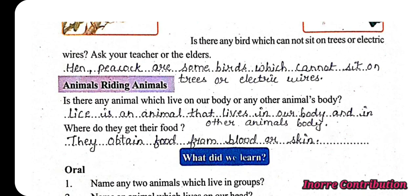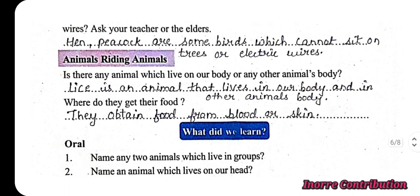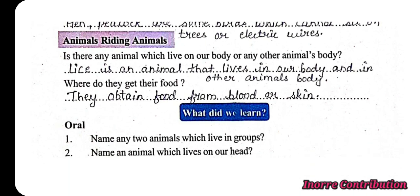Animals riding animals: is there any animal which lives on your body or any other animal's body? Lice and fleas are animals that live on our body as well as on other animals' bodies. They obtain their food from our blood or skin — they consume dead skin and suck blood.